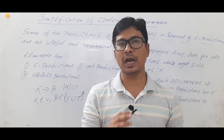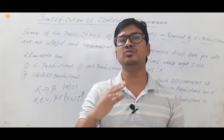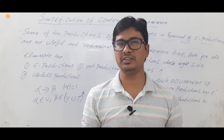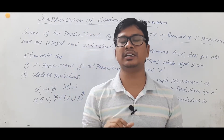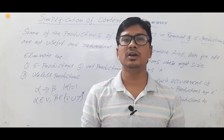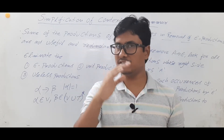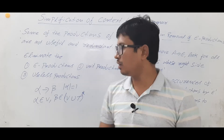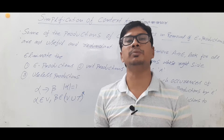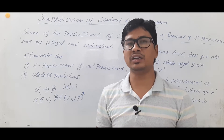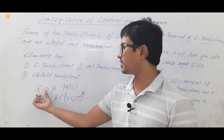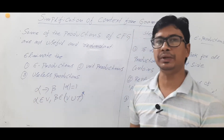We have discussed that a grammar is useful for us to construct a language, because a language consists of strings. From a grammar I can generate a string, and if I combine all the strings I will get a language. We have classified grammars into four types. One of those categories is a context-free grammar, which we also call a Type 2 grammar.